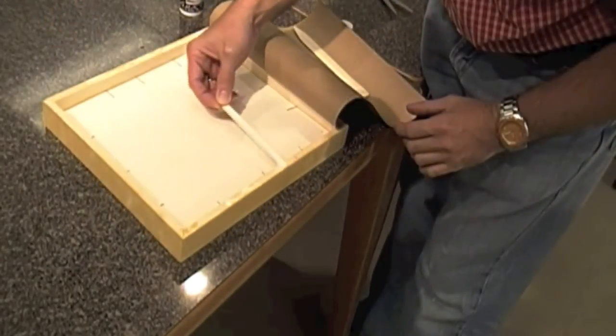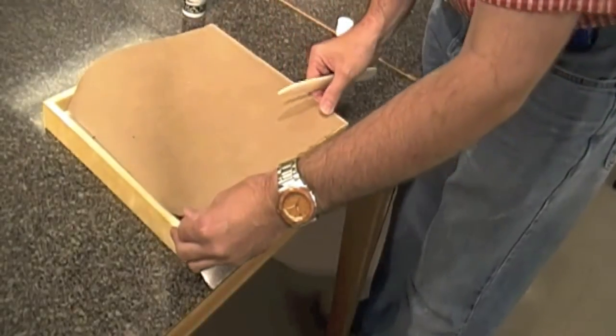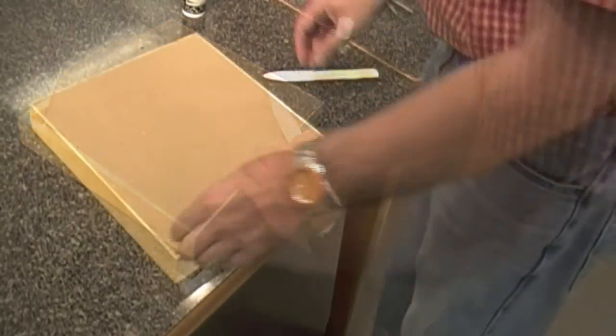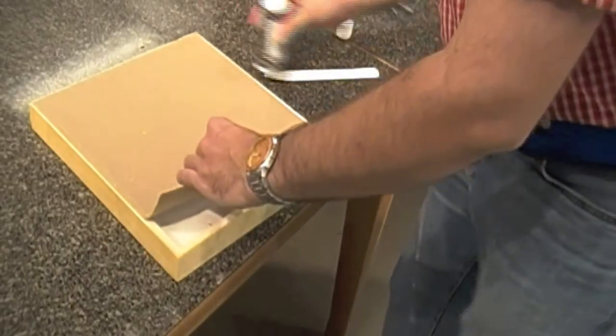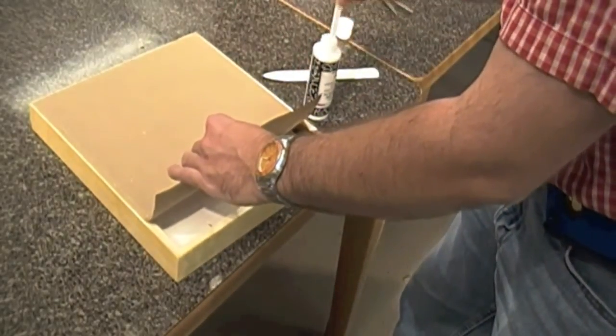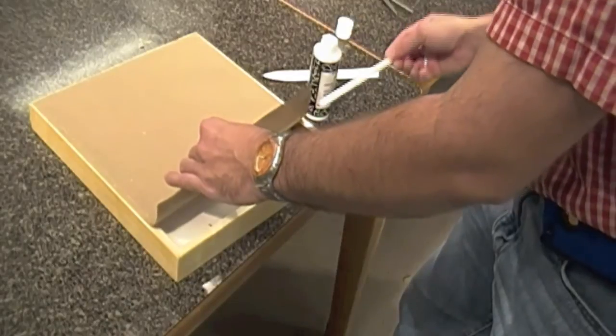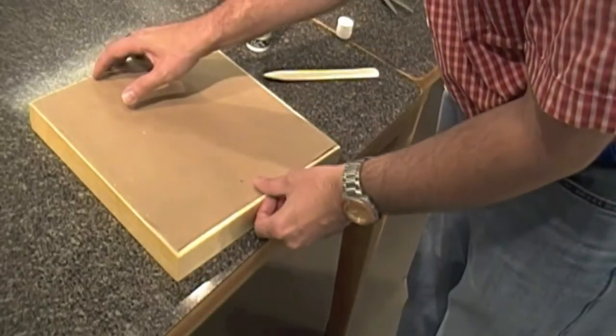You can also do it slightly larger than the frame size and then trim it off later on. But what I'll do is glue one side, then go most of the way down these other two sides. It's a bone folder, that white tool that I'm using. You can use your fingernail just to press it down as well.